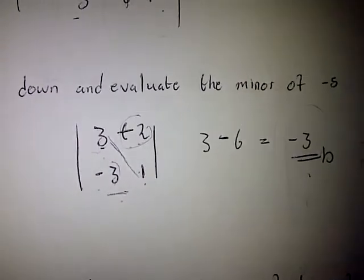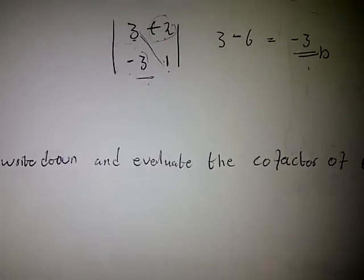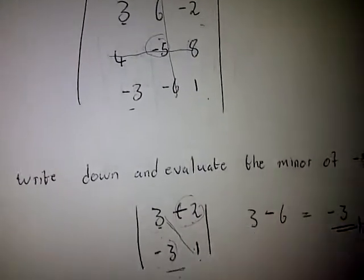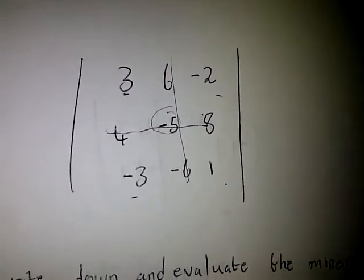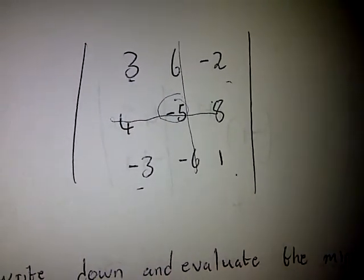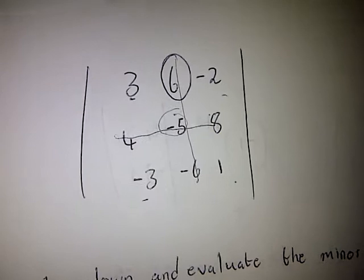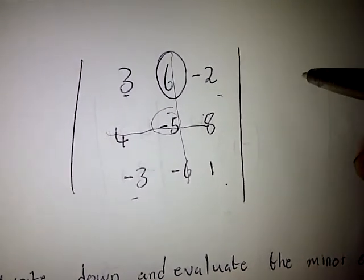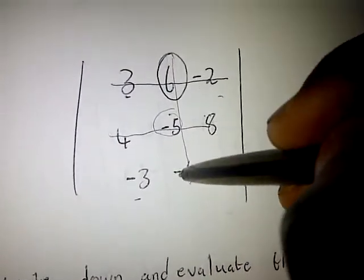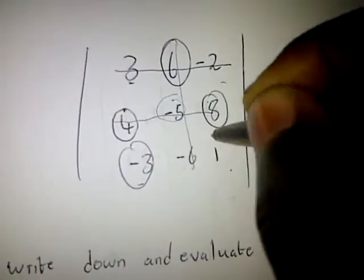Now, the next question says: write down and evaluate the cofactor of 6. The cofactor is similar to the minor but with an extra step. We note that 6 is in the first row and the second column. To find the cofactor, we cancel all numbers in line with 6 — horizontally and vertically — and we are left with 4, 8, negative 3, and 1.